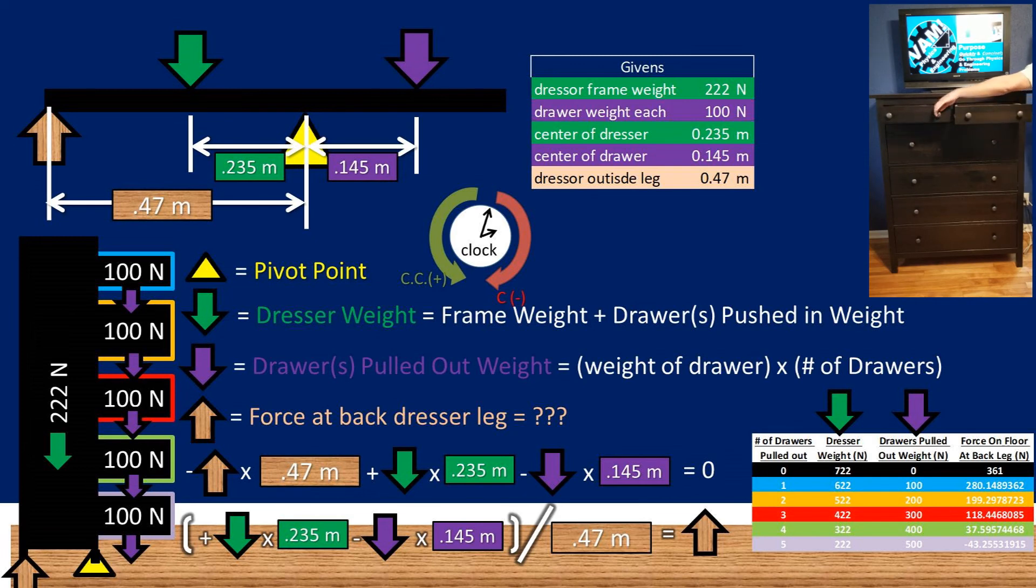So you could, in theory, safely pull out four drawers and the dresser would not tip over. But once you open that fifth drawer, the dresser would tip over.